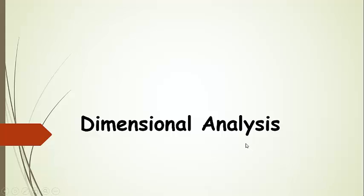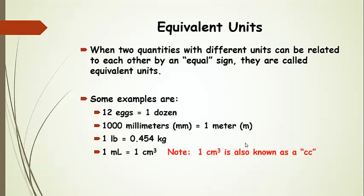Now we're going to talk about dimensional analysis. Before we talk about dimensional analysis, we need to talk about equivalent units. Equivalent units are just a certain quantity expressed in two different units, and it describes the same amount. We can express these two equivalent units with an equal sign, saying that this quantity is equal to this quantity, even though they have different units.